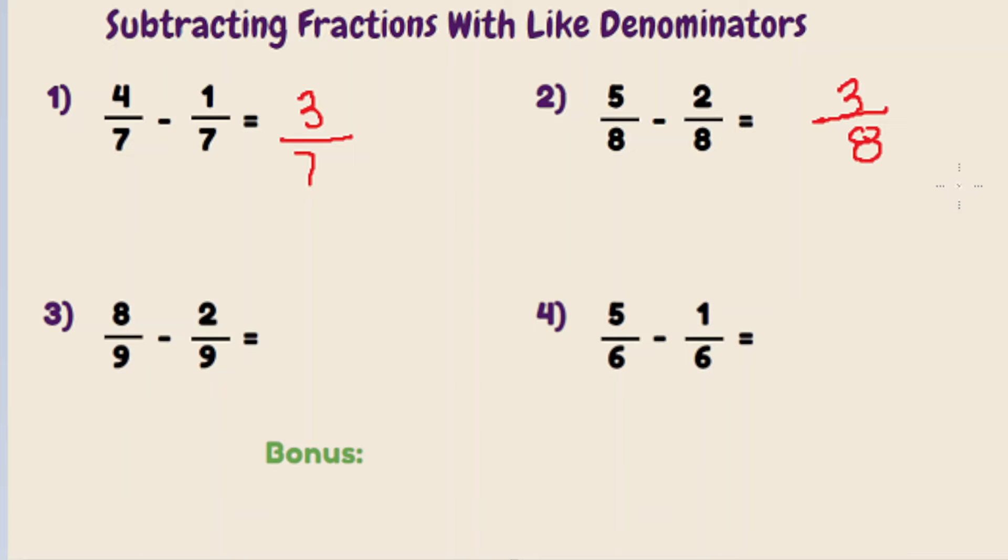Question three, what is 8 ninths minus 2 ninths? Step one, 8 minus 2 is 6. Keep our denominator of 9 the same. So the answer is 6 over 9.